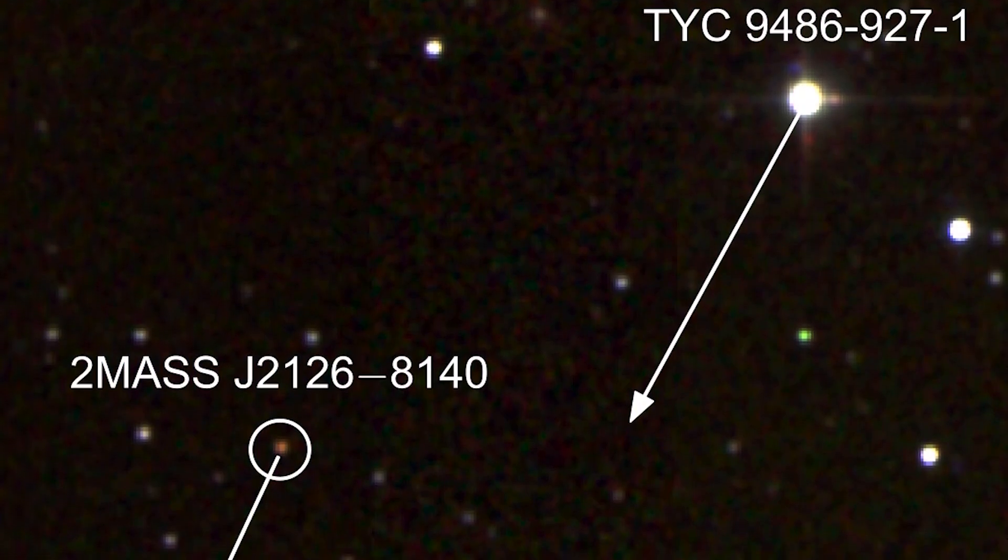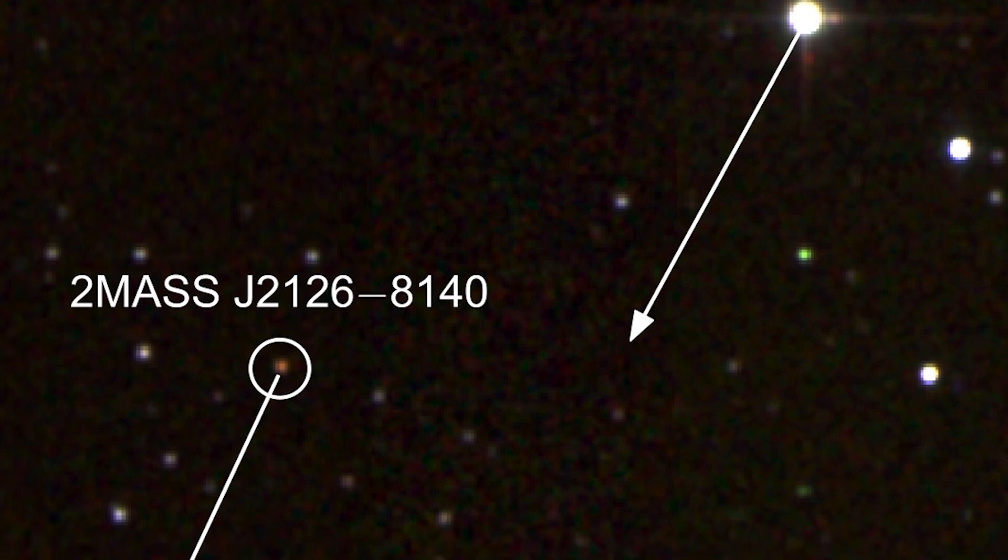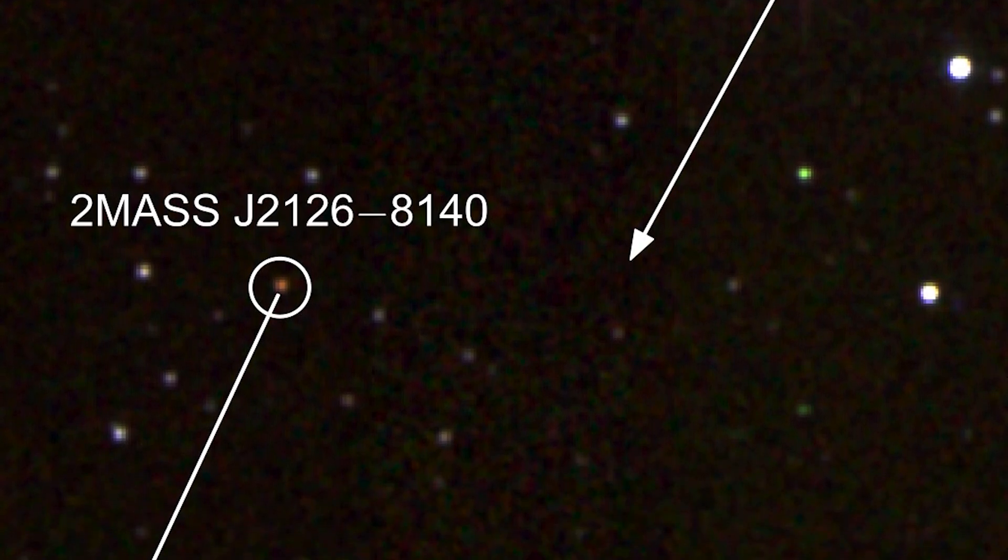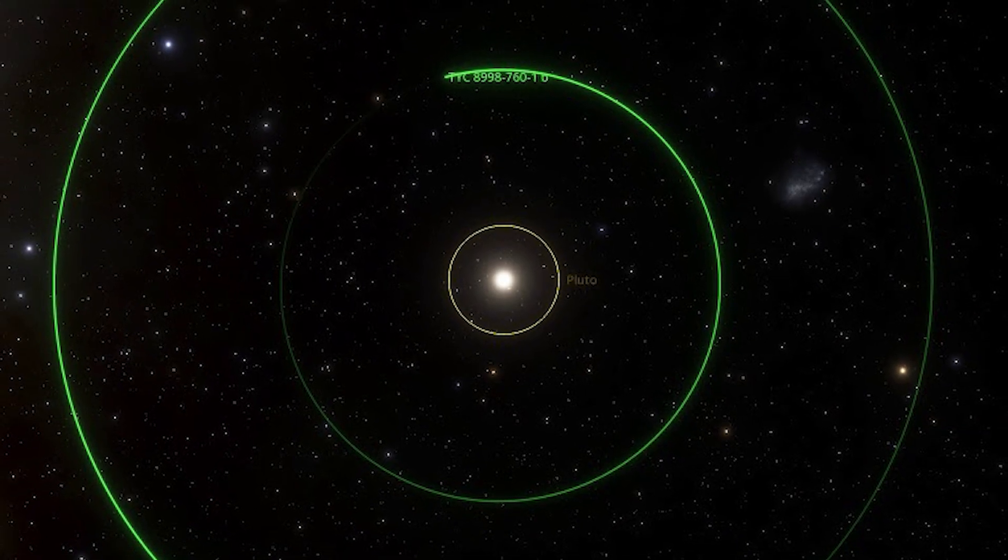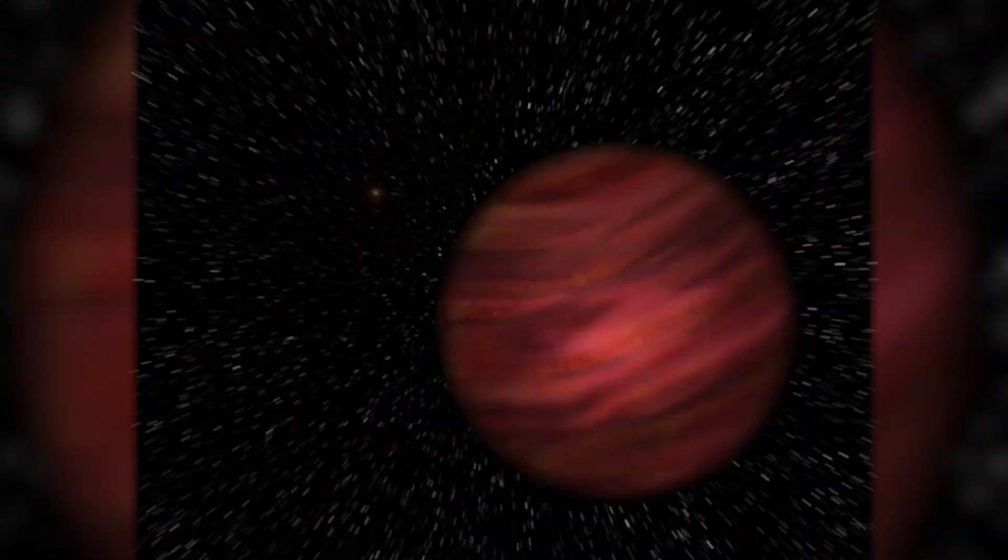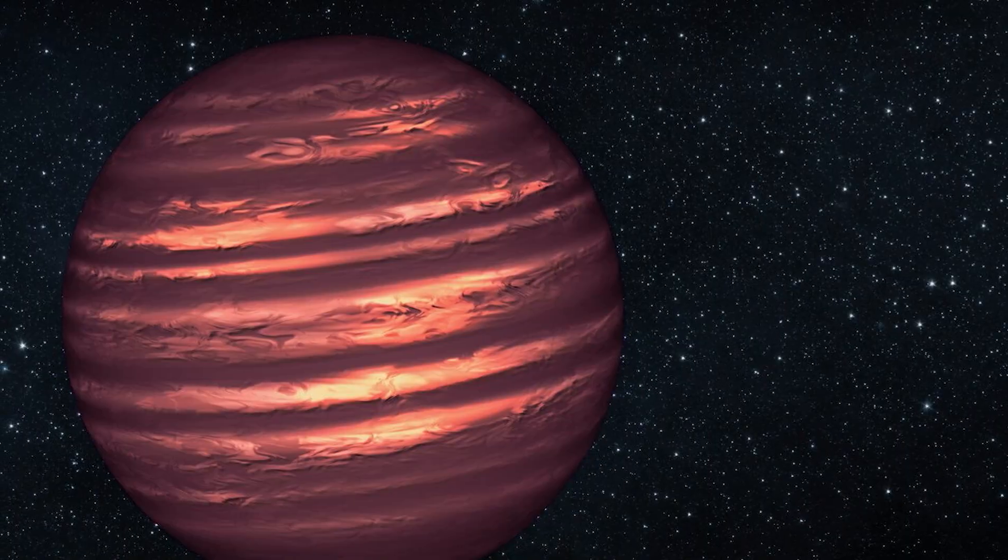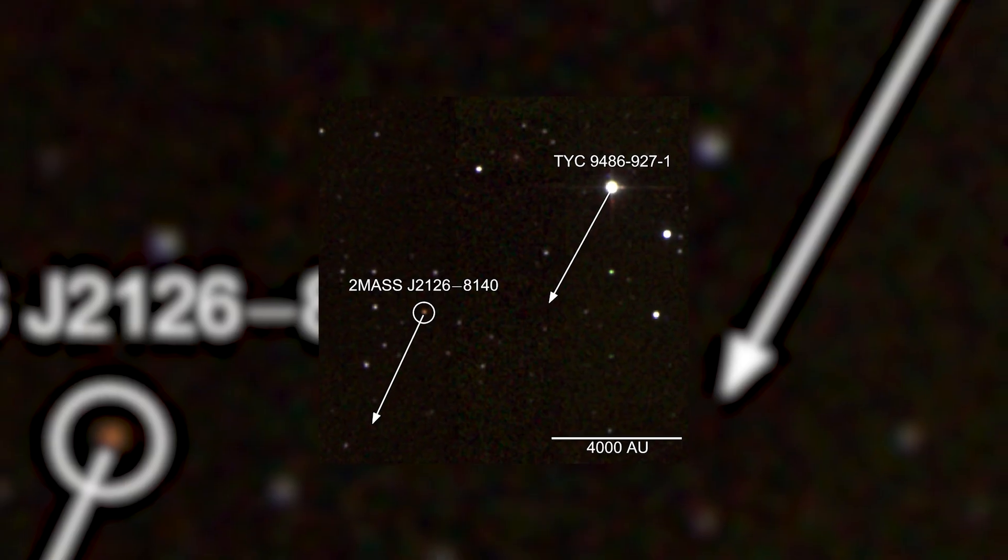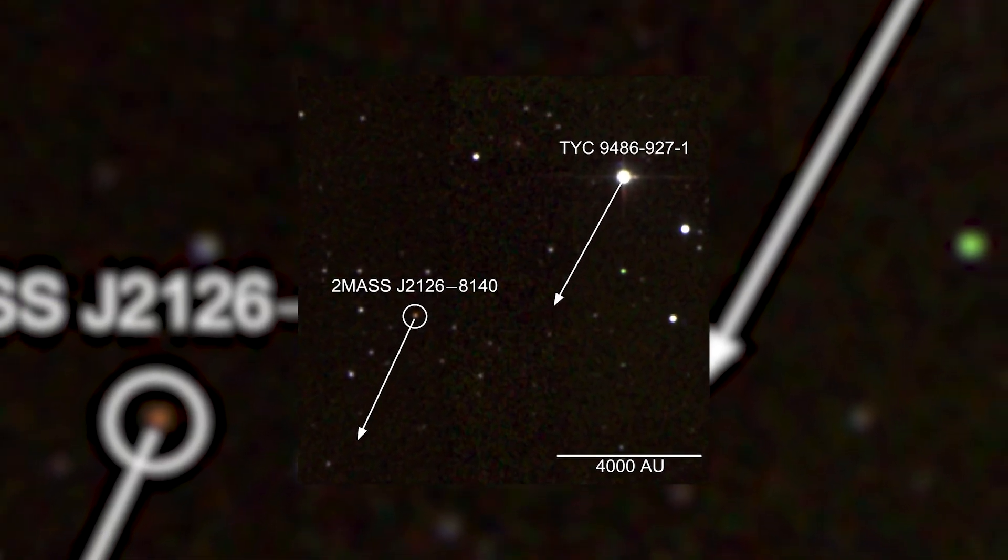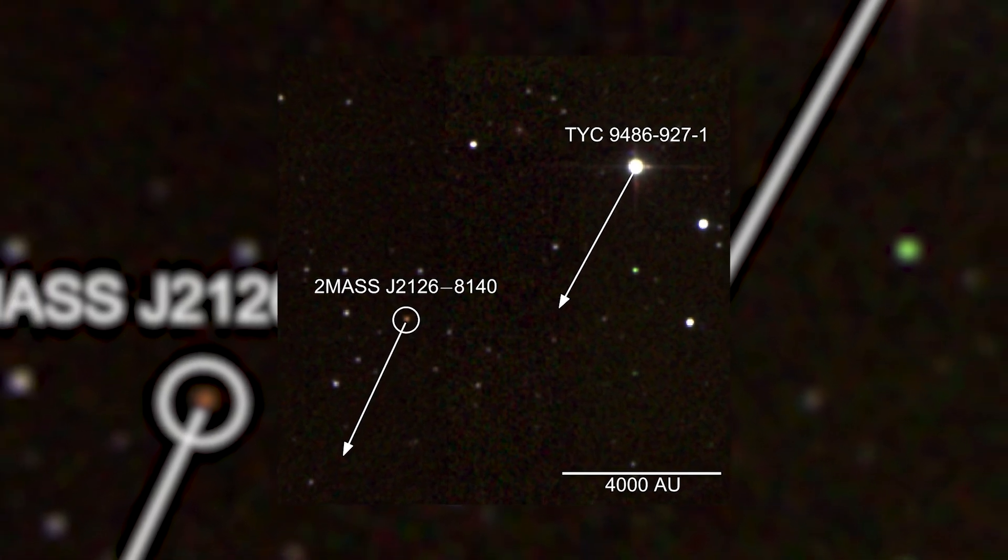Space is vast, and in this big space there's a special place called 2MASS J2126. This place is not as lonely as we thought. At first, scientists believed it was a lonesome planet wandering in space. But turns out, it's not alone. It's moving alongside a star named TYC 9486-927-1.